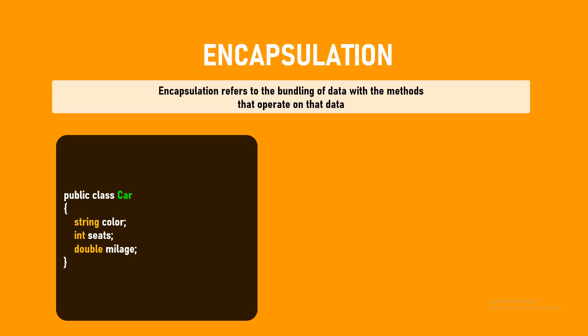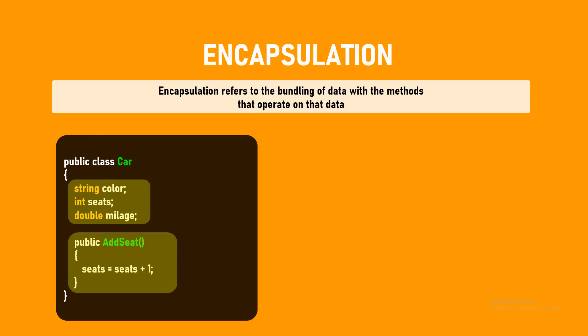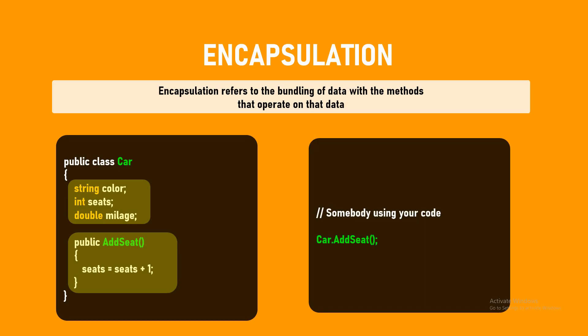Encapsulation refers to the bundling of data with the methods that operate on the data. The car contains three properties: color, seats, and mileage. We may have other functions as well. In object oriented programming, we can have the properties and the functions both inside the same class. The car class can contain a list of data and a list of functions that manage those properties or fields. The focus point is we are encapsulating the data and the functions inside the car class. That is what encapsulation means.